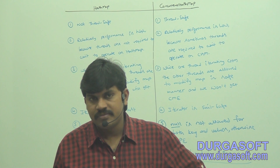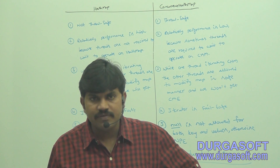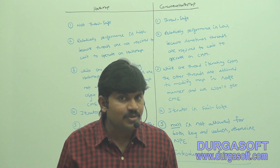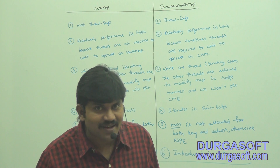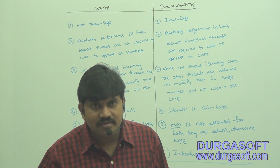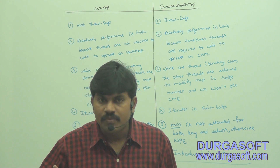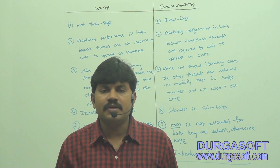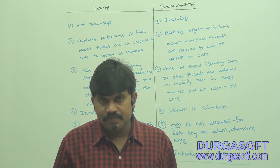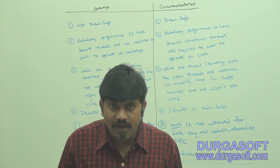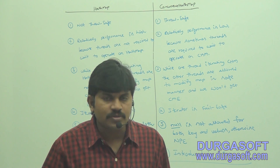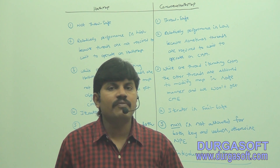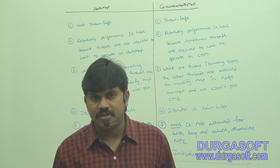HashMap is not thread safe, but ConcurrentHashMap is thread safe. Next, with HashMap we will get a ConcurrentModificationException, whereas with ConcurrentHashMap we will never get a ConcurrentModificationException.